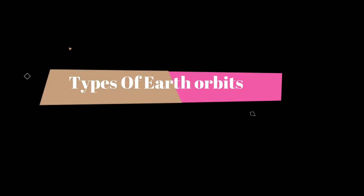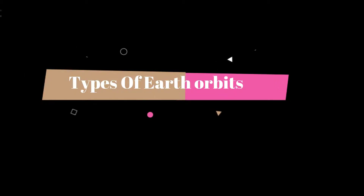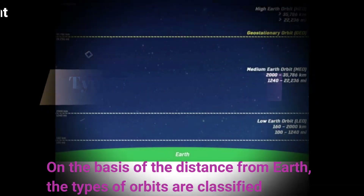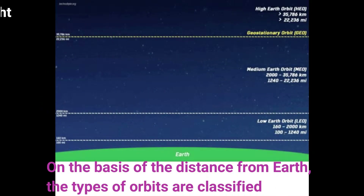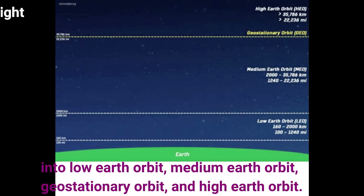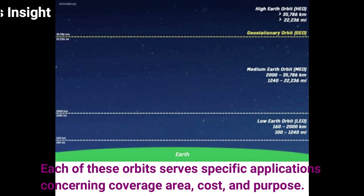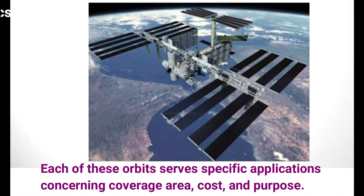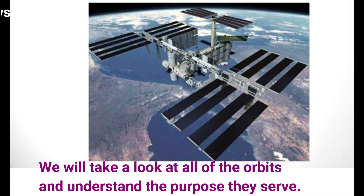In this video, we will see the types of Earth's orbits and the categories into which they have been divided. On the basis of distance from Earth, the types of orbits are classified into low Earth orbit, medium Earth orbit, geostationary orbit, and high Earth orbit. Each of these orbits serves specific applications concerning coverage area, cost, and purpose.